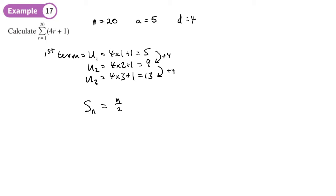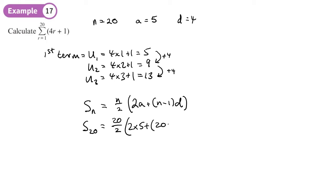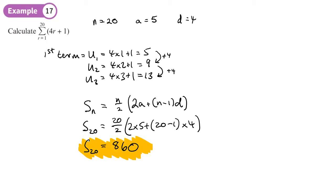To find the sum of the arithmetic series I use S = n/2 × (2a + (n−1)d). With n = 20, a = 5, d = 4: that's 20/2 × (2×5 + 19×4) = 10 × (10 + 76) = 10 × 86 = 860. So the sum of those 20 terms is 860.